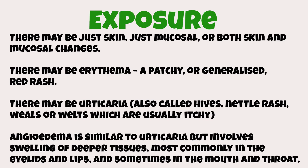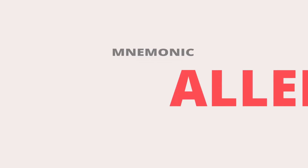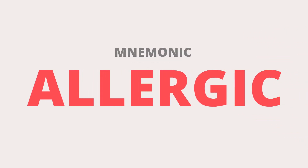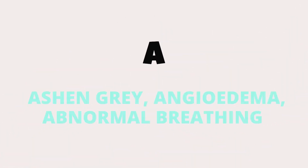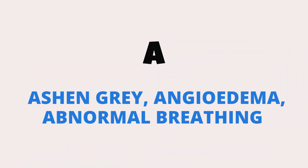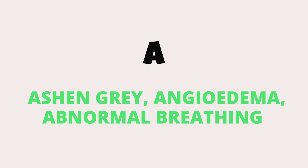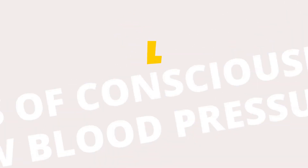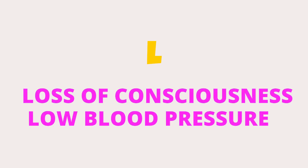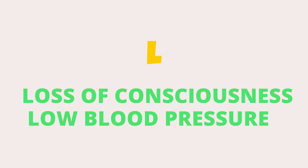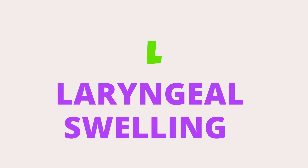The mnemonic we are going to use is ALLERGIC to remember the signs and symptoms of an anaphylactic reaction. A is for ashen grey appearance, angioedema, and abnormal breathing. The first L is for loss of consciousness or low blood pressure. The second L is for laryngeal swelling.